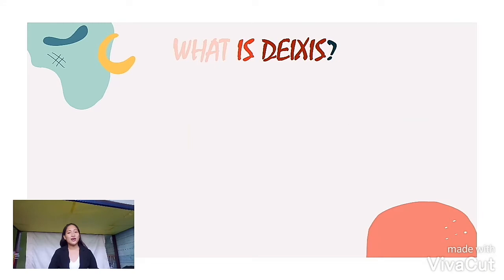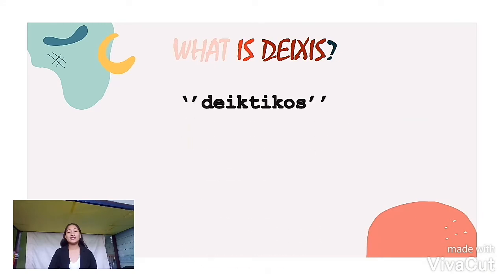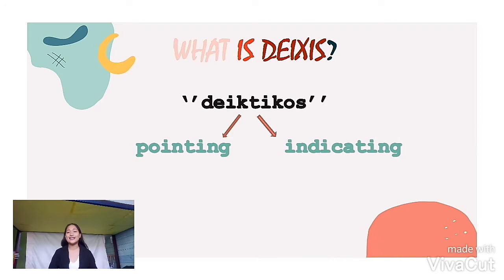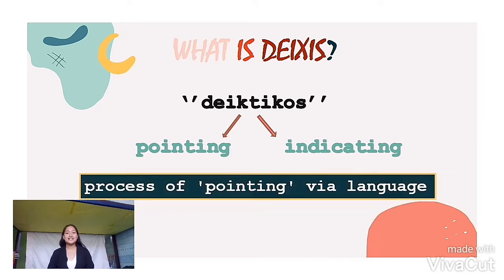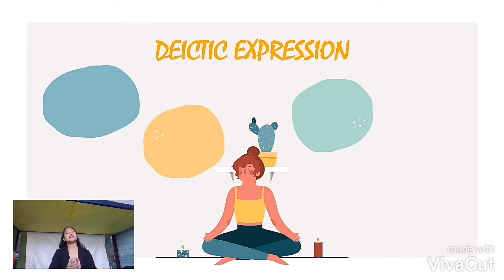Dyxis also came from the Greek adverb diiktikus, meaning pointing or indicating. Thus, dyxis is a process of pointing via language.